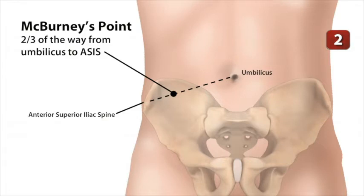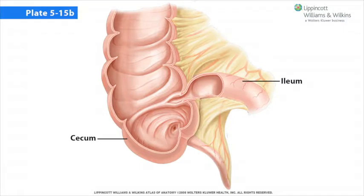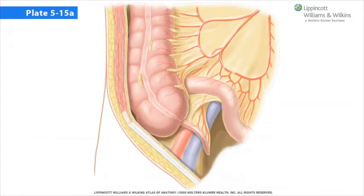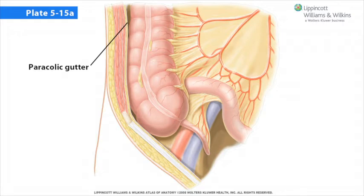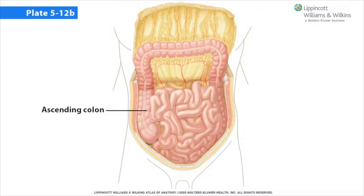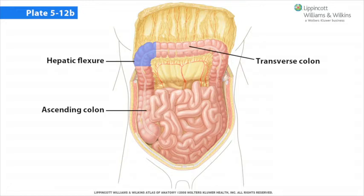The approximate location of the base of the appendix may be estimated by determination of McBurney's point. The cecum is continuous, superior to the ileocecal junction, with the ascending colon, which is secondarily retroperitoneal. Lateral to the ascending and descending colon are the right and left pericolic gutters — vertical grooves in the posterior abdominal wall that allow passage of fluids such as blood and bile through the posterior aspect of the abdominal-pelvic cavity. The ascending colon is continuous with the transverse colon at the hepatic, or right colic, flexure.